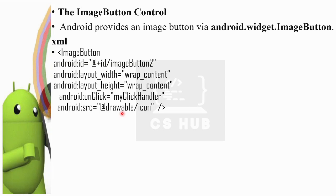We have two images here. We have a name for each image. At the right drawable slash, save the name. You can use the image button tag and set the source equal to @drawable slash followed by the image name.